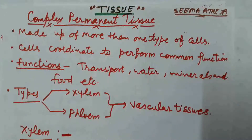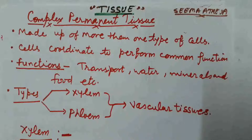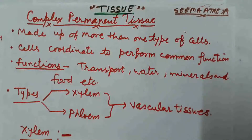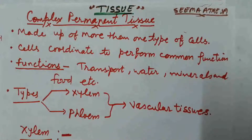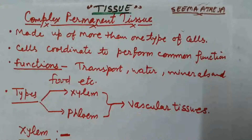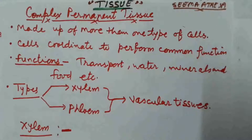From roots to higher parts of the plant, the transport of water, mineral salts, and food takes place with the help of complex permanent tissue. This is the main function of complex permanent tissue. Complex permanent tissue are of two types in case of plants: one is xylem and one is phloem.